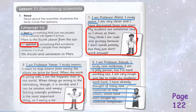Read about the scientists. Underline the facts. Circle the opinions. A fact is something that can be proved. Other people will agree it is true. An opinion is something that someone believes. Other people may disagree whether it is true.